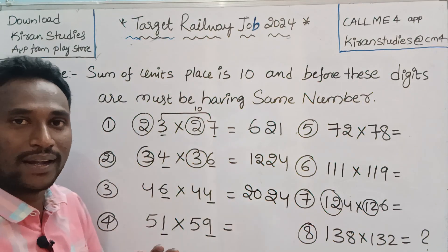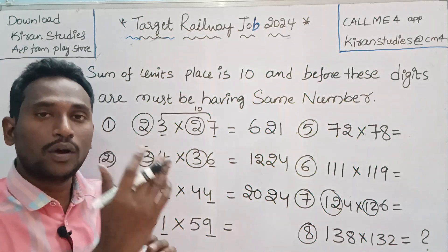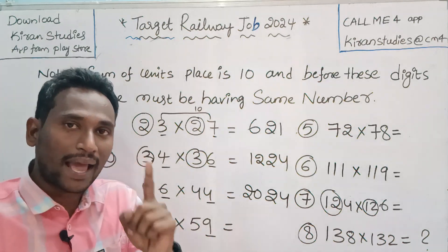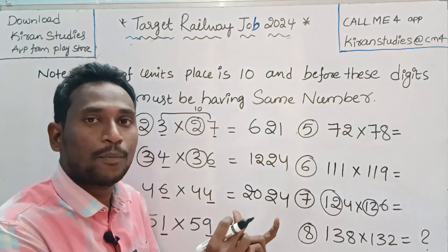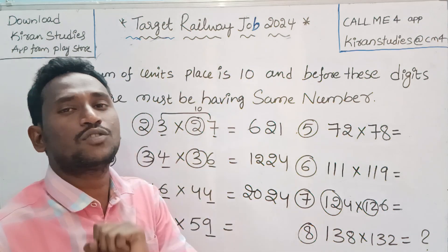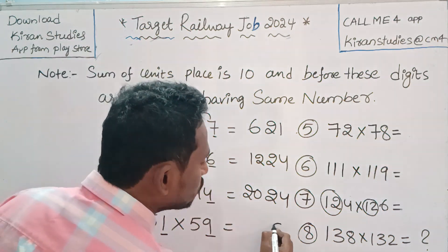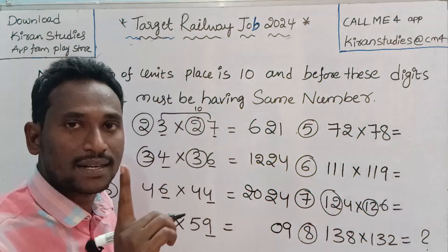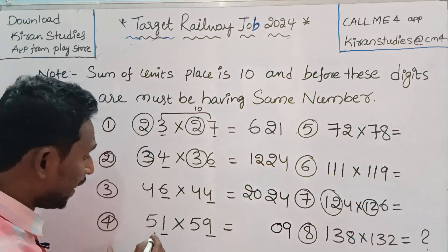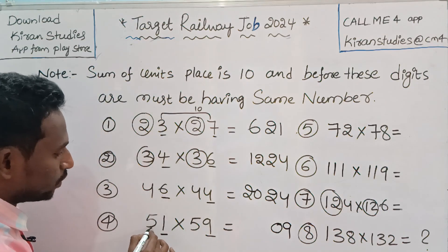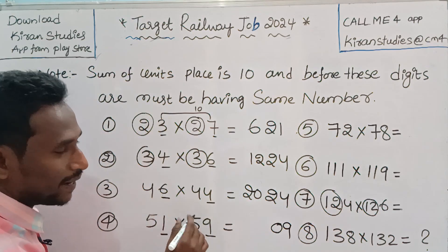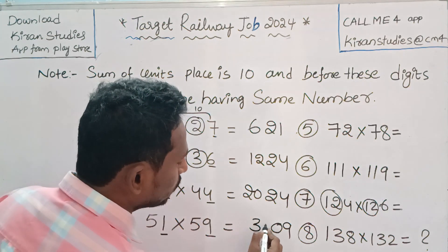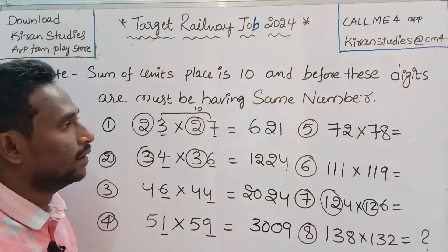Next: 9 plus 1 is 10, so the rule is satisfied. These are two multipliers: 9 times 1 is 9. We need to write two digits, so write 09. The same number here is 5, so 5 times 6 is 30. The answer is 3009.